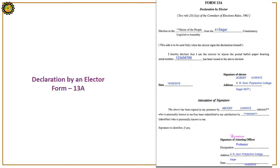Form 13A contains: name of constituency, serial number of ballot paper, signature of elector, address of elector, date, signature of attesting officer, and designation and address of attesting officer. The attesting officer can put his official seal or simply write the designation or address by pen.